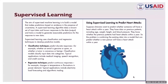The two categories under supervised learning are classification techniques and regression techniques. Classification techniques predict discrete responses. Examples would be determining whether an email is genuine or spam, or classifying a tumor as malignant or benign. Classification models classify input data into categories and are typically applied to medical imaging, speech recognition, and credit scoring.